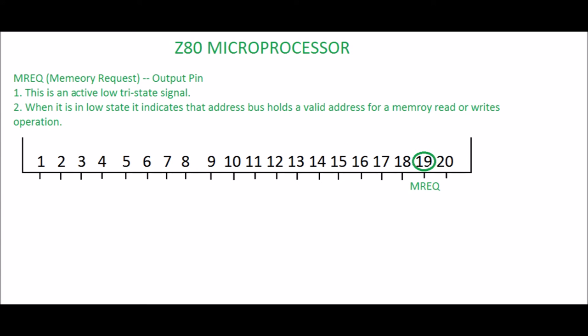Pin 19: MREQ, Memory Request. It is an output pin. This is an active low tri-state signal. When it is in low state, it indicates that the address bus holds a valid address for a memory read or write operation.